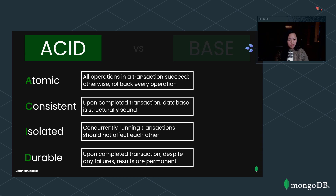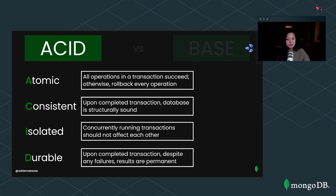These are very stringent guarantees, which is why you usually see them with more traditional relational databases. There are lots of systems that require the strength of these kinds of guarantees. As the emergence of NoSQL databases came along, softer properties have been developed that are usually used in relation with NoSQL databases. If you're thinking these are a little too stringent, maybe BASE properties are what you're looking for.